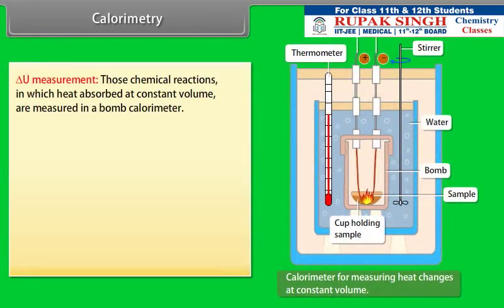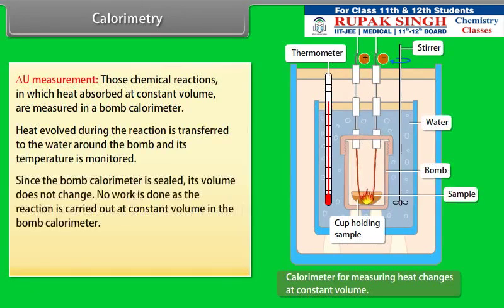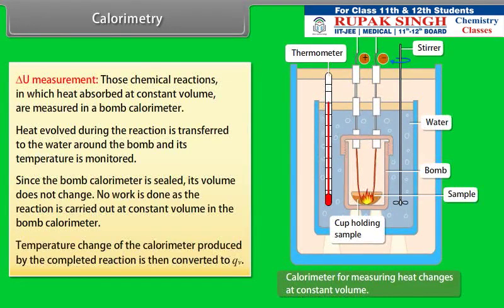ΔU measurement: chemical reactions in which heat is absorbed at constant volume are measured in a bomb calorimeter. The steel vessel is immersed in a water bath to ensure no heat is lost to the surroundings. A combustible substance is burned in pure dioxygen supplied in the steel bomb. Heat evolved is transferred to the surrounding water, and temperature is monitored. Since the bomb calorimeter is sealed, its volume does not change, and no work is done. The temperature change is then converted to QV.